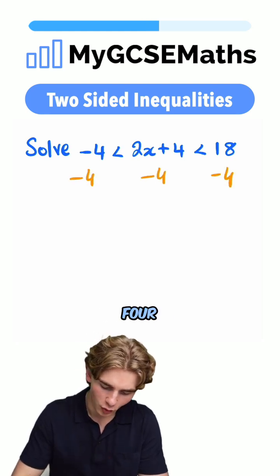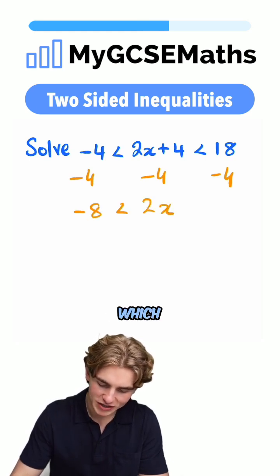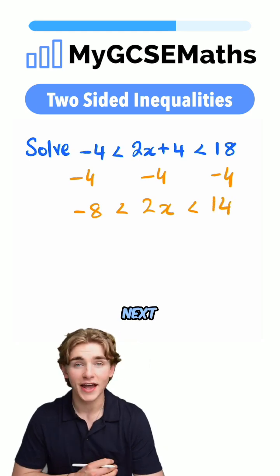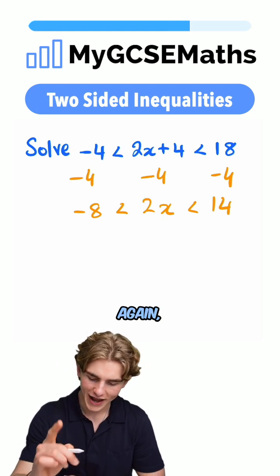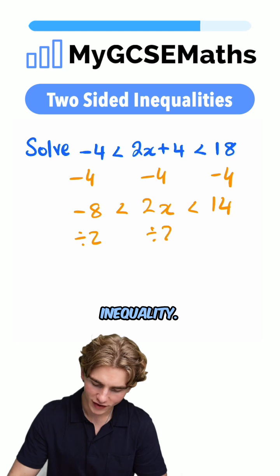Negative four subtract four is going to be negative eight, which is less than 2x, which is less than 14. Next up, we need to divide our 2x by two to get the x on its own. So again, we're going to do this to all three parts of our inequality.